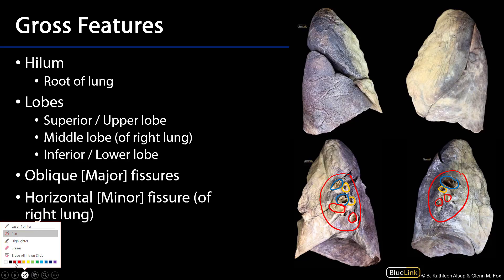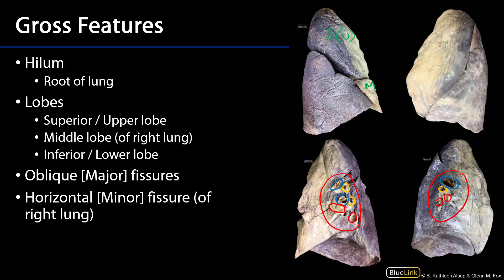Each lung has a number of lobes. The right lung has three lobes: a superior (upper) lobe, a middle lobe, and an inferior (lower) lobe. The left lung has only a superior and an inferior lobe. These lobes are separated from one another by fissures lined by the visceral pleura, with oblique fissures separating the superior from inferior lobes, and on the right also separating the inferior from the middle lobe.